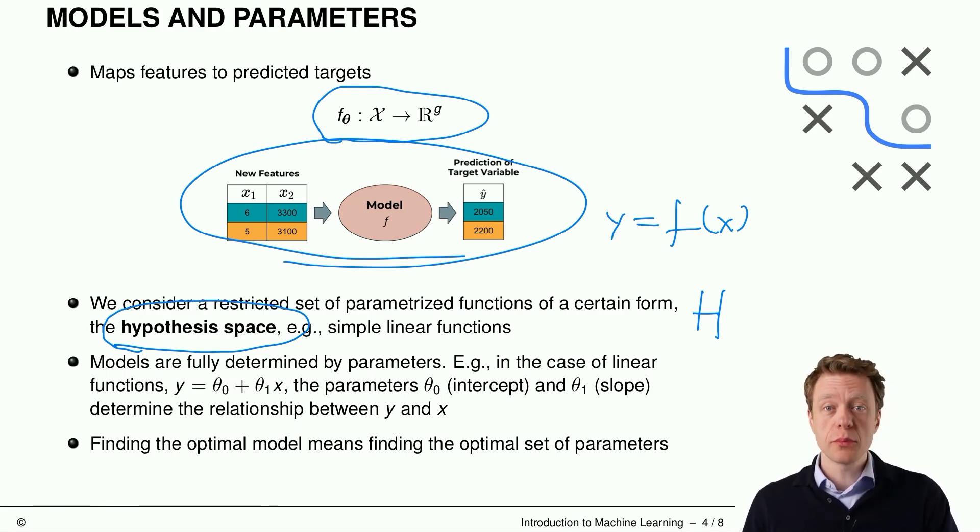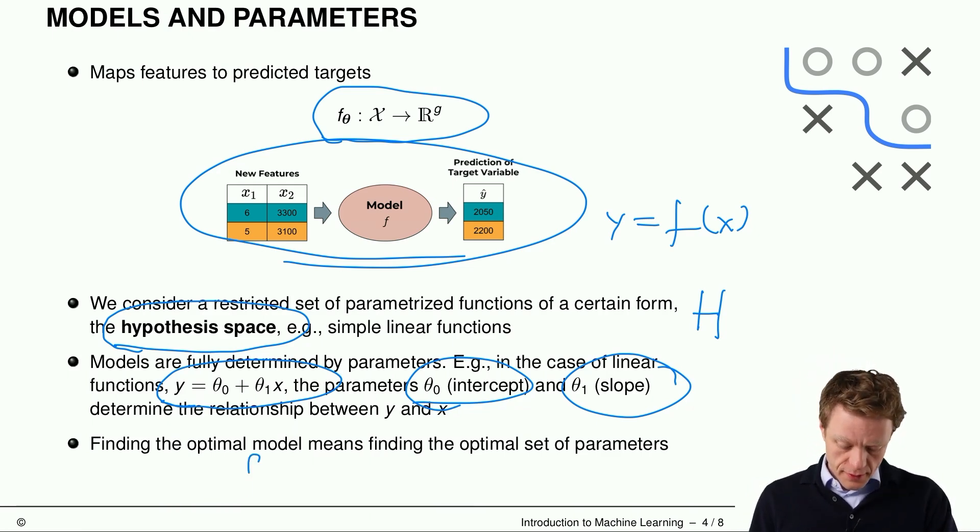We can also parameterize these functions. So, for example, in the case of a linear model, we can say y is theta 0 plus theta 1 times x1, where theta 0 is just the intercept and theta 1 is the slope. And that means then that finding the optimal model f is the same as finding the optimal set of parameters, theta.